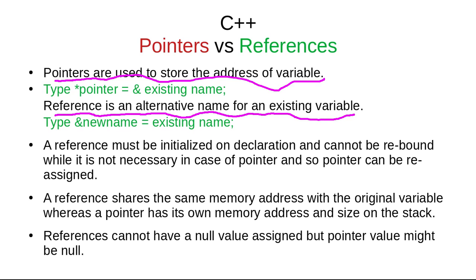We define the pointer type with the star symbol. The type can be any type — integer, float, double, or any other type — and the pointer name can be anything. It stores the address of an existing variable using the reference operator.